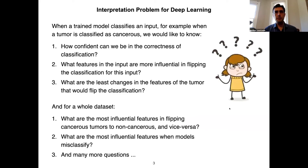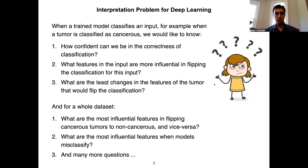Deep learning is used in many different applications. Its use has become widespread, but these models are computationally complex and there is not enough understanding about how they work — their functional behavior is an open question. The questions that usually arise in interpretation are natural ones: how confident can we be in the correctness of a classification, or what features in the input are more influential? We can ask these on the individual level or on the group level.